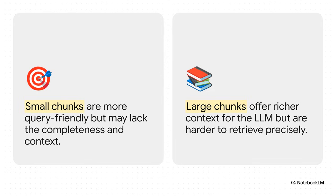Think of it this way. Small chunks are like a sniper scope — they can zero in on a very specific query with incredible precision, but they might miss the bigger picture, the surrounding context. On the flip side, large chunks are like a wide-angle lens. They give you all this rich, expansive context that helps the language model generate a really fantastic, nuanced answer. The problem is they can be a lot harder to pinpoint during a search.